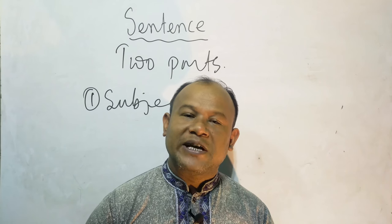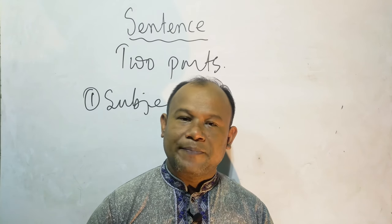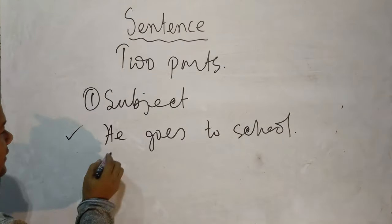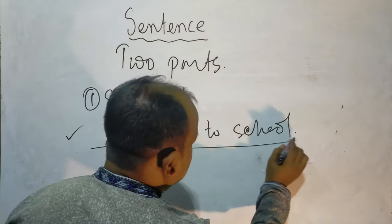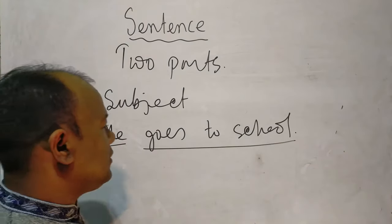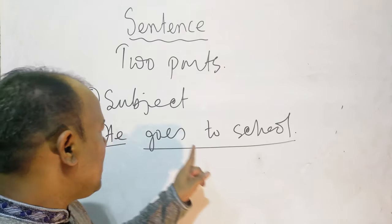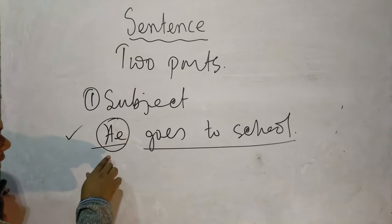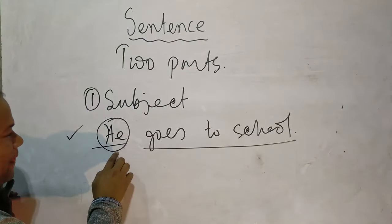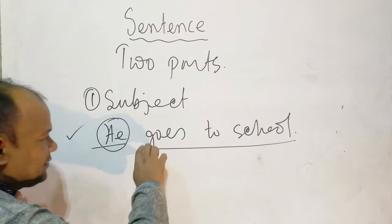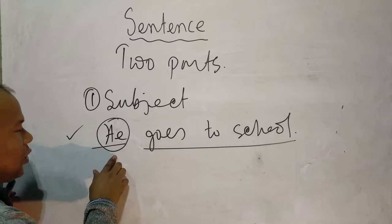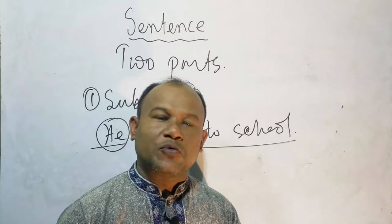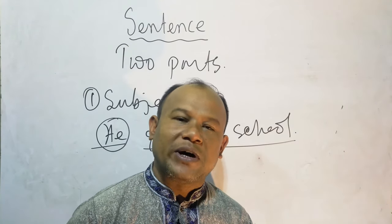The subject is a part of a sentence about whom or what the sentence is. Here in the sentence 'he goes to school,' the subject is 'he.' 'Goes to school' has been told or described about 'he.' So we can say the subject is the part of the sentence about whom or what the sentence is — in other words, the subject is also the doer of the action.